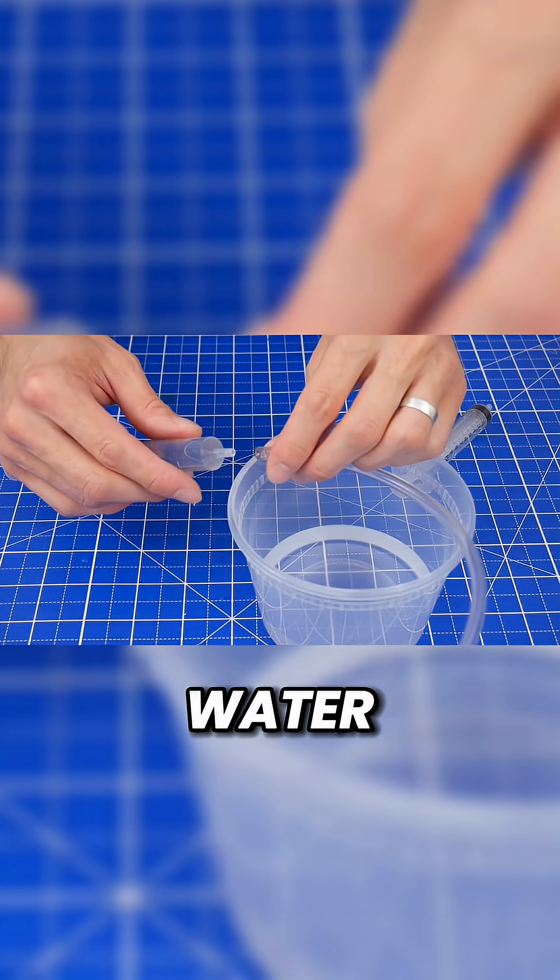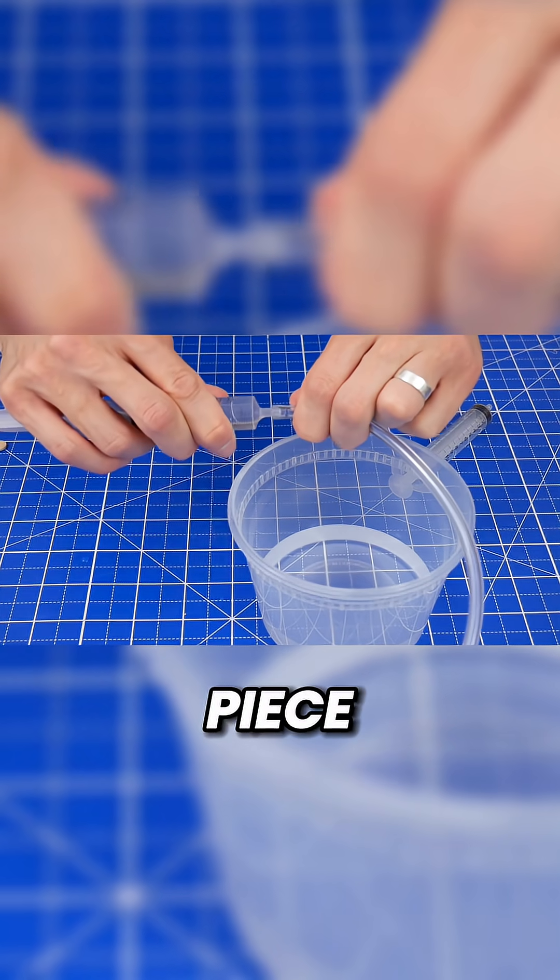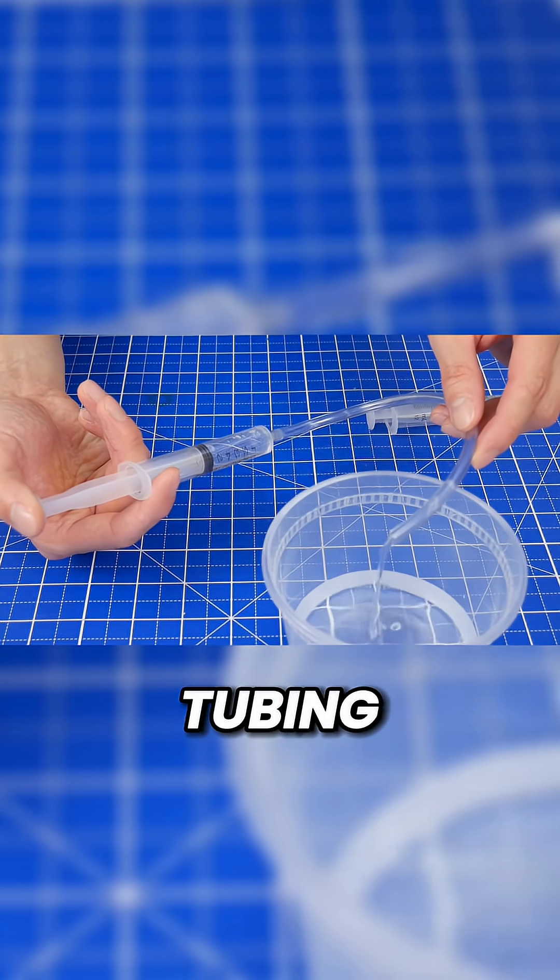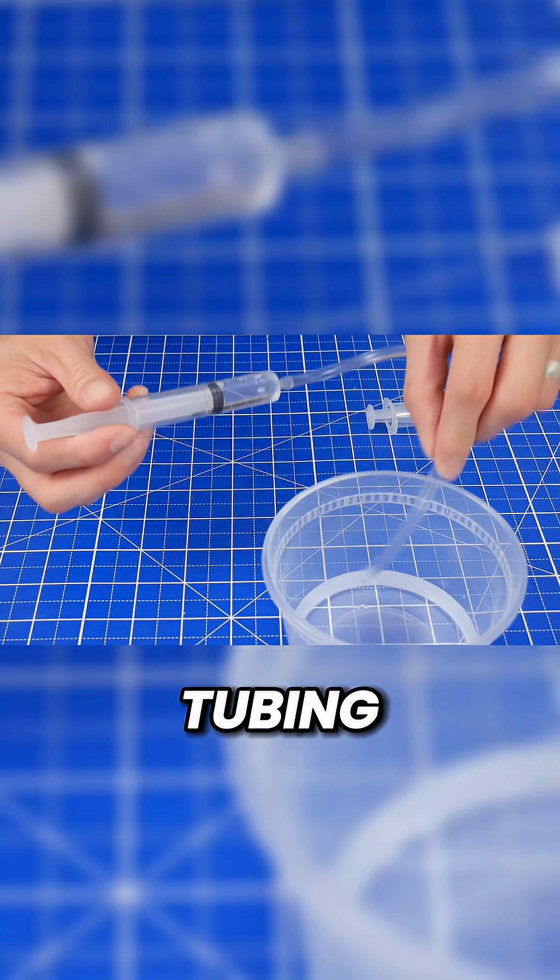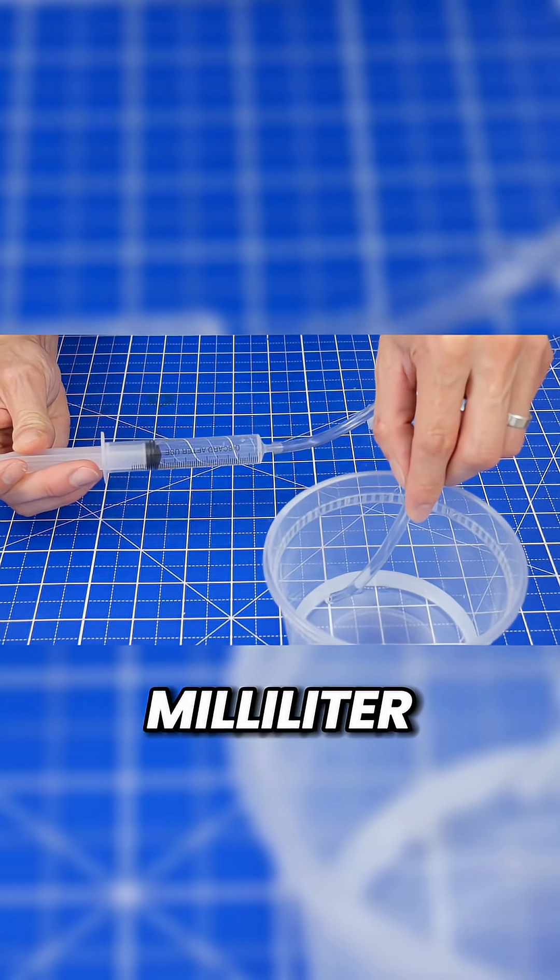Fill up one of the syringes with some water, attach a 6 to 8 inch piece of tubing, push water through the tubing to remove the air, then put the tubing in the water and fill up the syringe to the 10 milliliter mark.